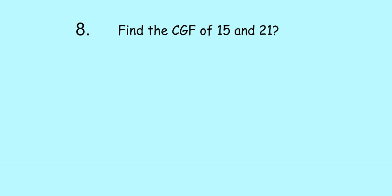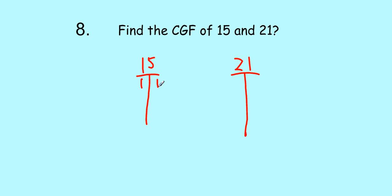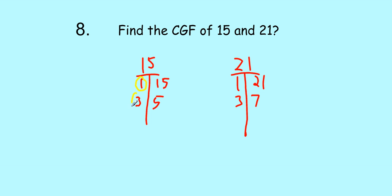Let's look at number eight: find the GCF of 15 and 21. We do our factor T for 15: one and 15, then three and five — two is not a factor, four is not, and we start repeating at five. For 21: one and 21, two is not, three and seven. Then we circle the common factors: 1 and 3. The greatest of those is 3. So the GCF is equal to 3. That's our answer for number eight.